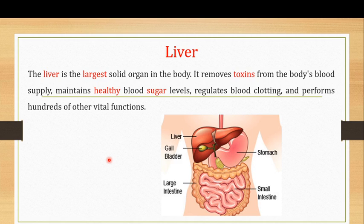The liver is the largest solid organ in the body and it performs a variety of functions. It removes toxins from the body's blood supply, it maintains a healthy blood sugar level, it regulates blood clotting, and it performs hundreds of other vital functions.